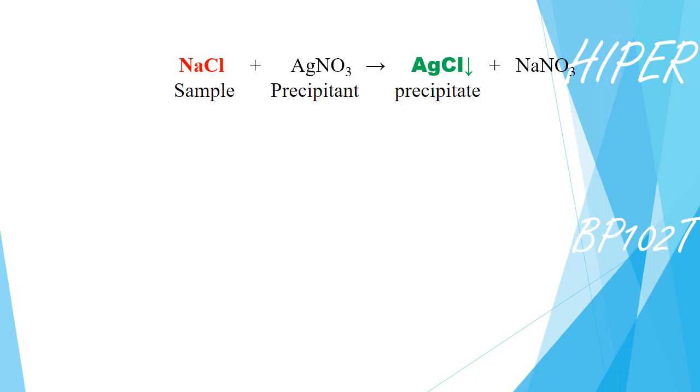Precipitate is an insoluble ionic product of a reaction. So the sample is converted into the insoluble product, and we call it precipitate.